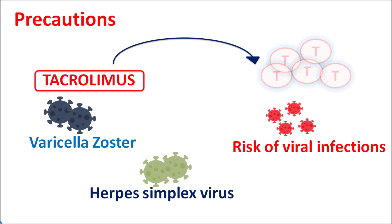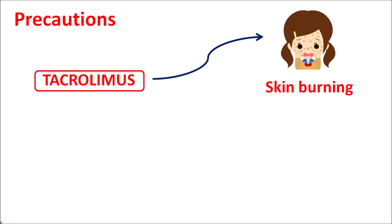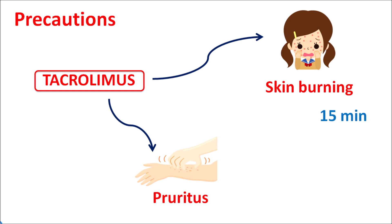Similarly, this drug can produce skin burning as well as pruritus, resulting in itching. These two effects are observed with tacrolimus cream and can be observed even after a few hours of application. On average, skin burning sensation can be observed within 15 minutes of application and pruritus within 20 minutes, but they can extend up to a few hours. Caution should be taken when these are more pronounced in patients, and in case of severe allergic reactions this drug should be withdrawn.